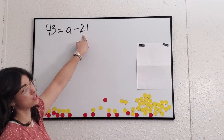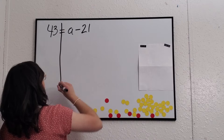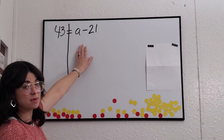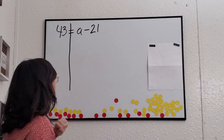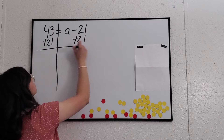We have to get rid of this minus 21, or this negative 21, in order to get the variable a by itself. I'm going to put a line through this equal sign — this helps students understand that on each side it must be balanced. What you do to one side you have to do to the other. So we'll start off trying to get a by itself, and in order to do that we will have to add 21 to both sides.